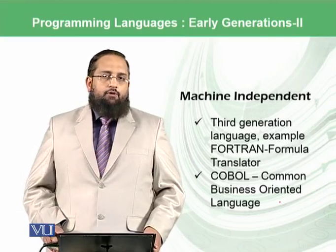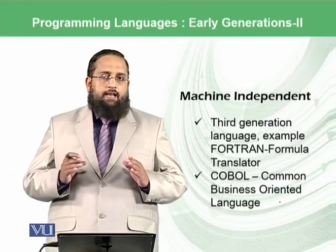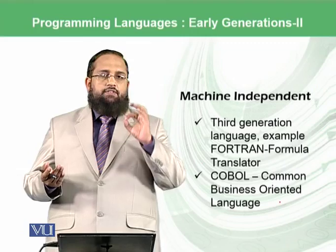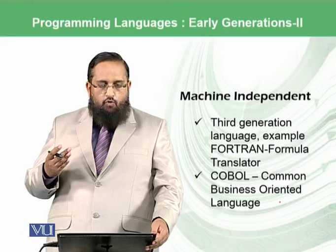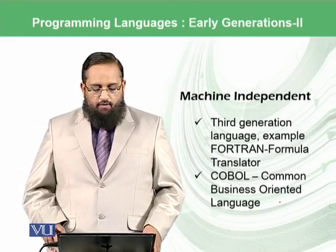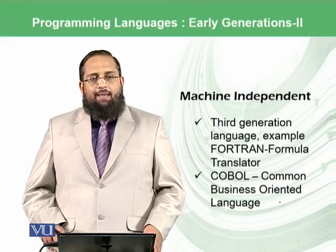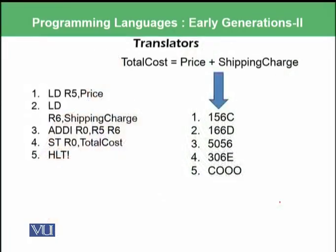If we are able to do this, then our code will be machine independent, because the translator will check the characteristics of the target machine — how many registers there are, what the RAM size is, and so on. The third generation languages, like Fortran (formula translator) and COBOL (common business oriented language), were built to translate one instruction like 'total cost equals price plus shipping charge' into those five steps.